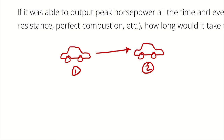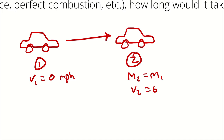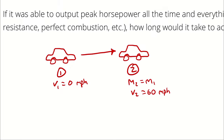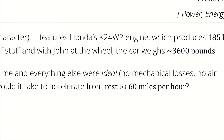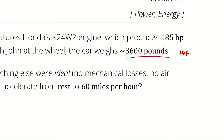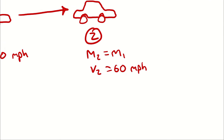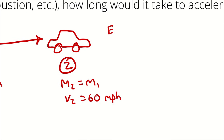The mass of the car is going to be the same — mass 2 is equal to mass 1. Including the given information: V1, the velocity at state 1, is 0 miles per hour, and velocity 2 is 60 miles per hour. Furthermore, the car weighs 3,600 pounds — that would be pounds of force. And the engine produces 185 horsepower, which I'll call E dot in, the rate of energy entering the car.